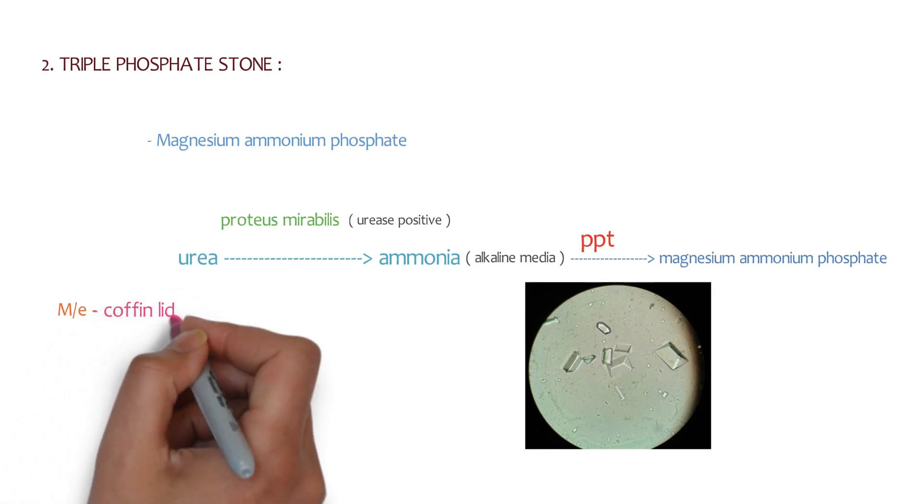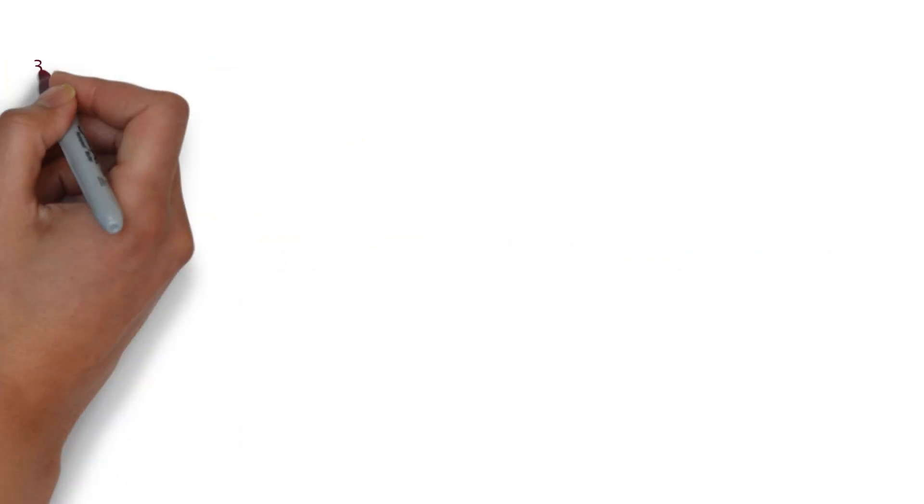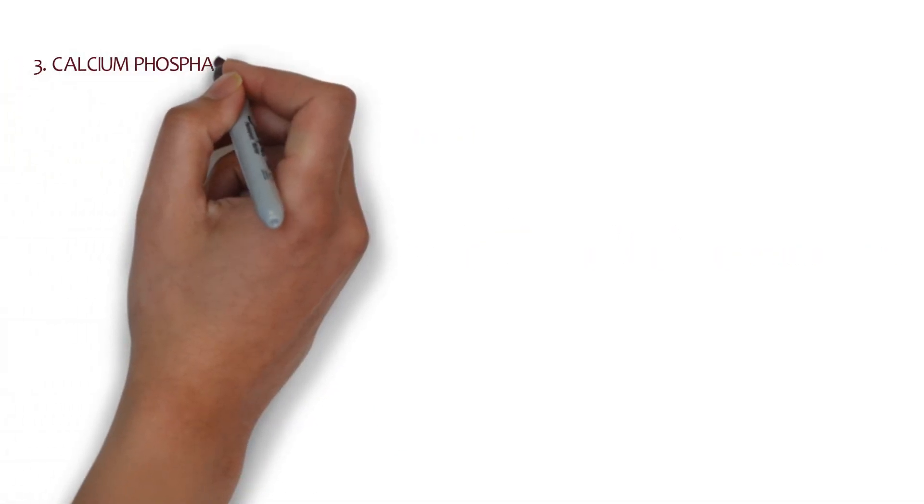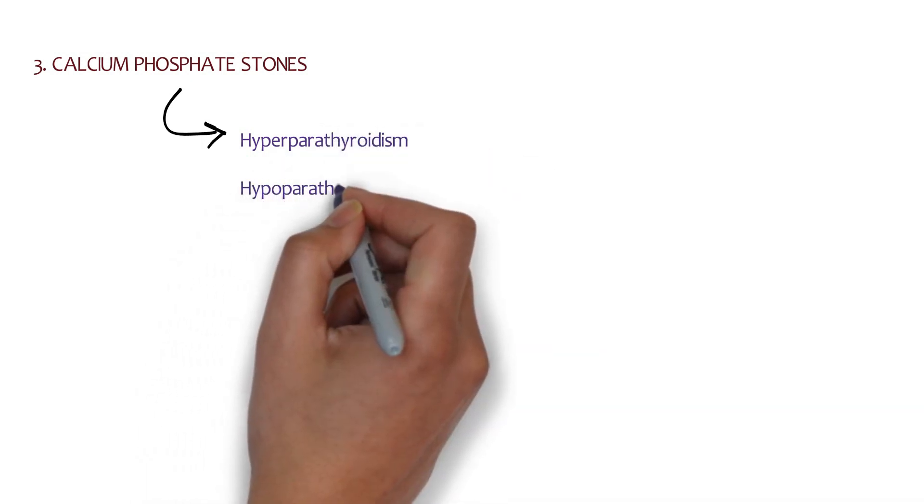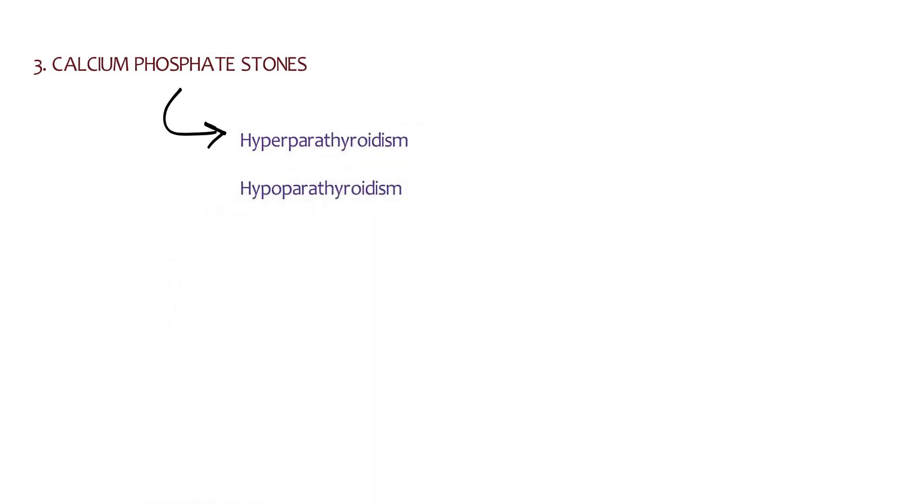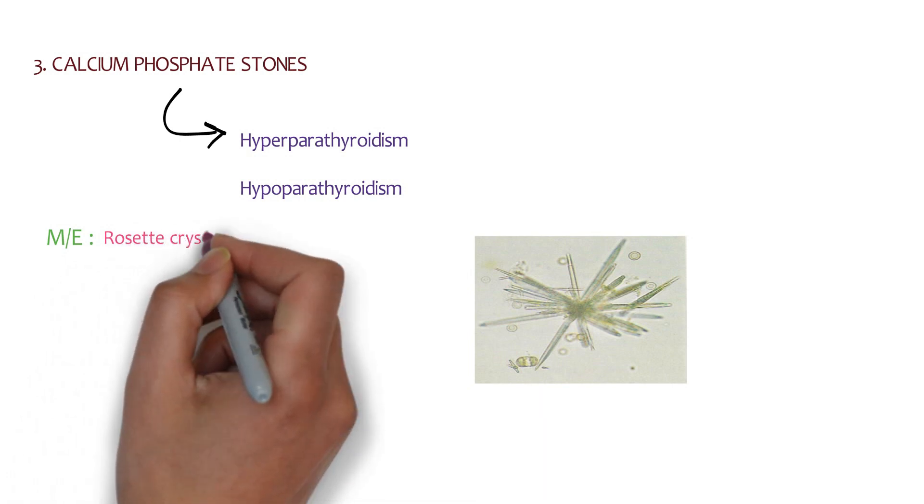The third one is calcium phosphate stone. These stones are seen in conditions like hyperparathyroidism or hypoparathyroidism. We are going to treat this condition according to the formation of the stones. Now look over here - this is the microscopic examination. How does it appear? Yes, it appears like a rosette. So in microscopic examination, rosette.